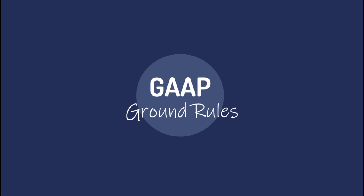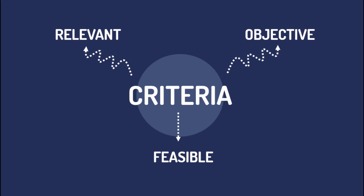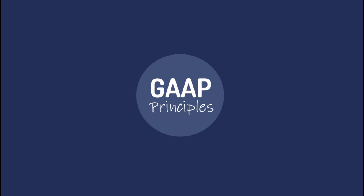So when do we say that a principle is generally acceptable? The principle simply needs to follow this criteria. First, the principle needs to be relevant, meaning it should be useful in making a decision. Second, the principle needs to be objective, meaning it is not influenced by personal bias. Third, the principle needs to be feasible, meaning it can be implemented without undue complexity or cost. The following are some of the Generally Accepted Accounting Principles that are followed and used today.